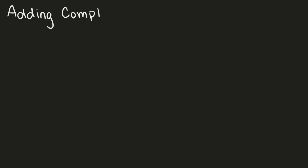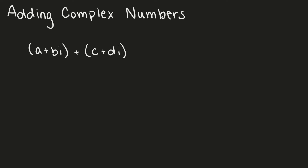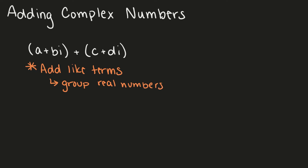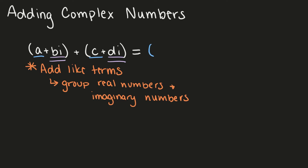Let's look at adding complex numbers. Remember, our complex number is in the form a plus bi. So say we're adding two complex numbers together: a plus bi plus c plus di. All we need to do is add the like terms. A and c are our real numbers and our like terms. Bi and di are imaginary numbers and our like terms. So we can rewrite this as a plus c plus bi plus di.